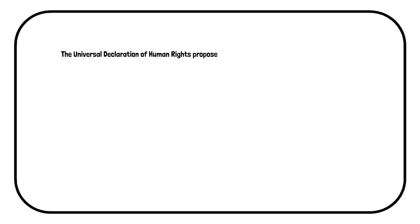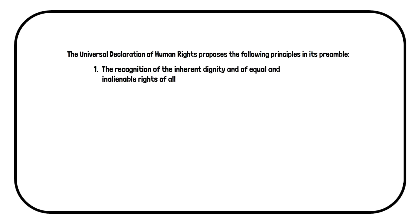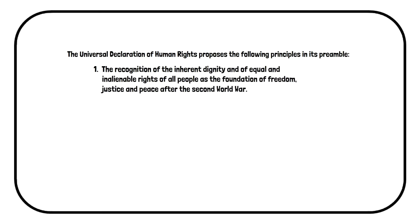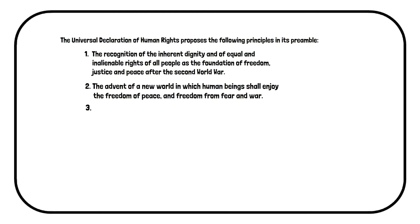The Universal Declaration of Human Rights proposes the following principles in its preamble: the recognition of the inherent dignity and of equal and inalienable rights of all people as the foundation of freedom, justice and peace after the Second World War; and the advent of a new world in which human beings shall enjoy freedom of peace and freedom from fear and war.